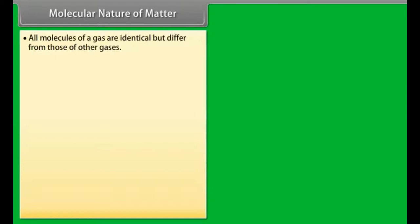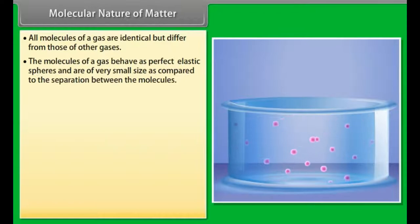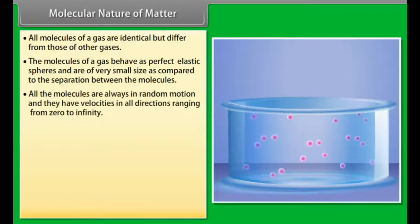All molecules of a gas are identical but differ from those of other gases. The molecules of a gas behave as perfect elastic spheres and are of very small size as compared to the separation between the molecules. All the molecules are always in random motion and they have velocities in all directions ranging from zero to infinity.